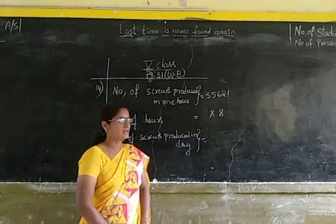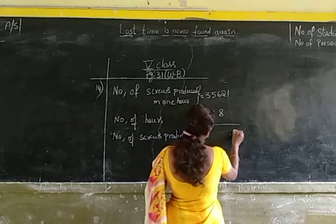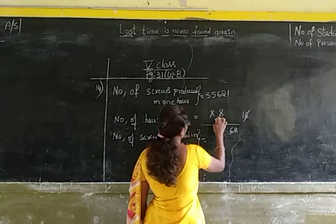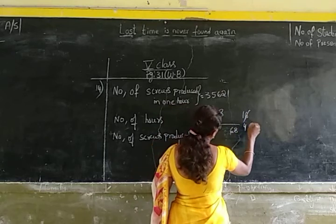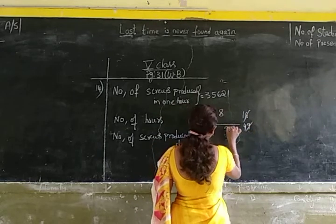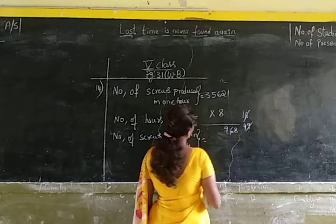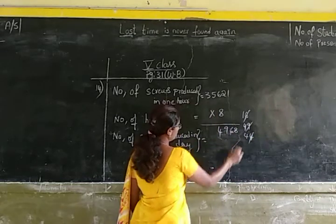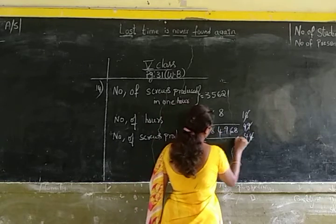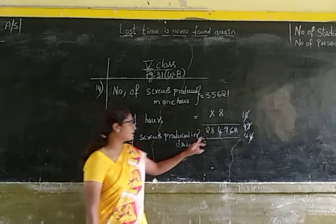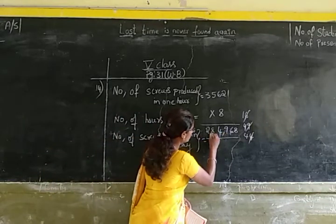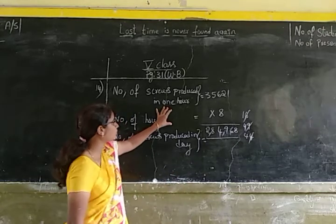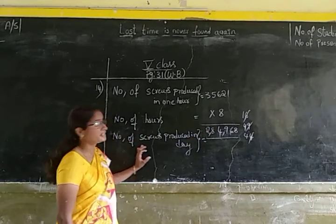So let us multiply. 8 × 1 is 8, 8 × 2 is 16, 8 × 6 is 48 plus 1 is 49. 8 × 5 is 40 plus 4 is 44. 8 × 3 is 24 plus 4 is 28. So the number of screws produced in a day are 2 lakhs 84,968. So here we have to find out the number of screws produced in a month.